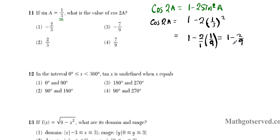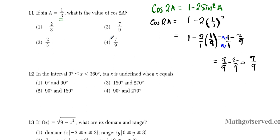To subtract 2/9 from 1, we have to express 1 with a denominator of 9 — finding the LCD of 1 and 9, which is 9. Multiplying top and bottom of 1 by 9 gives 9/9. So 9/9 minus 2/9 equals 7/9. Our answer is option number 4.